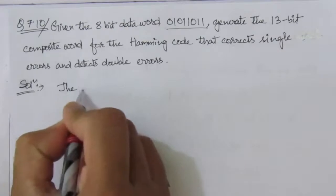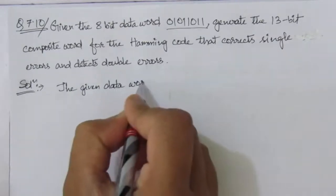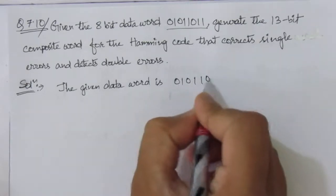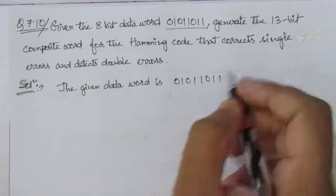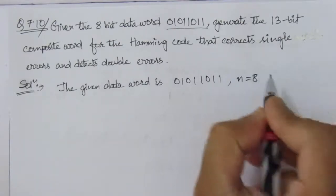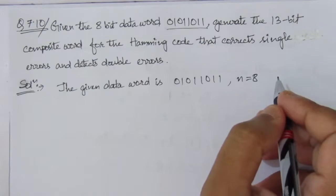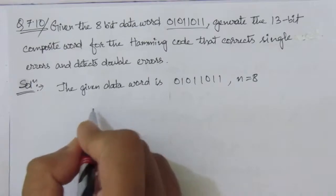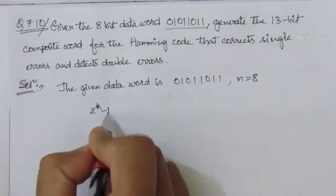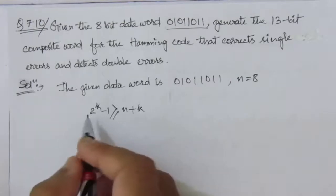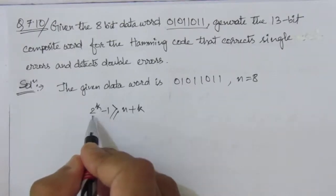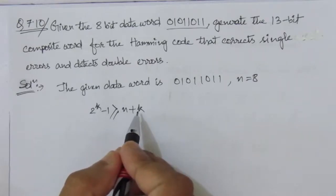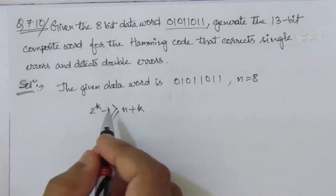The given data word is 0 1 0 1 1 0 1 1. Here we have 8 bits, so n equals 8. To find k, the number of parity bits, we use the formula 2 to the power k minus 1 should be greater than n plus k. For k equals 1, 2 to the power 1 is 2, minus 1 gives 1, and 1 is not greater than 8 plus 1 equals 9, so k cannot be 1.